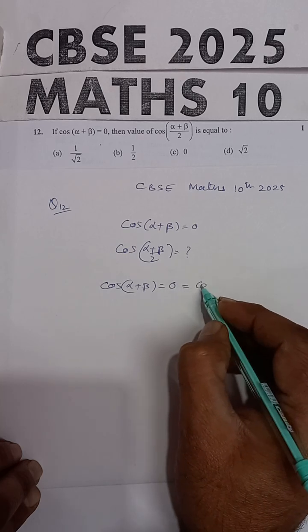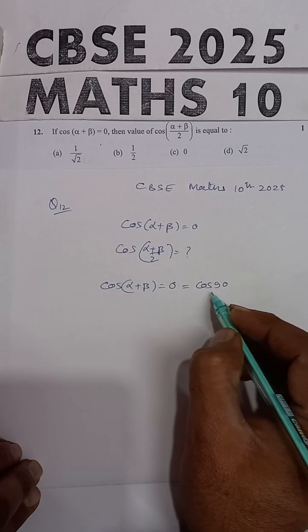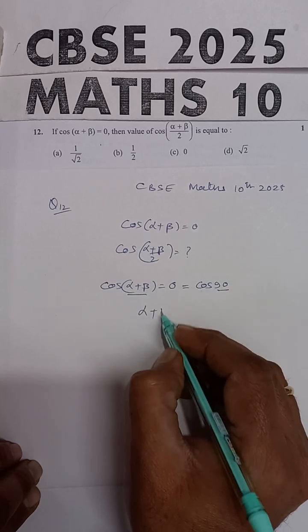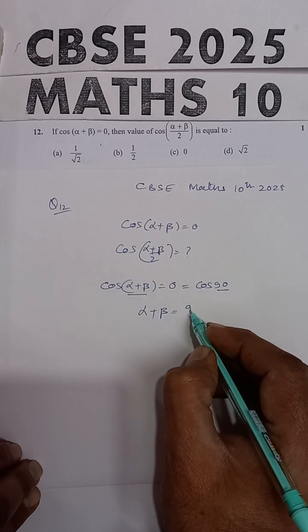And we know that cos 90, cos of 90 is also equal to 0. So comparing both the sides, we find that alpha plus beta will be equal to 90.